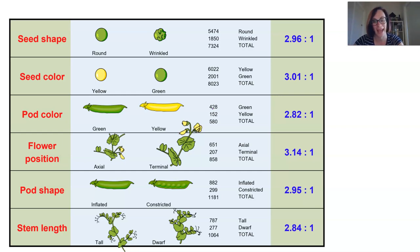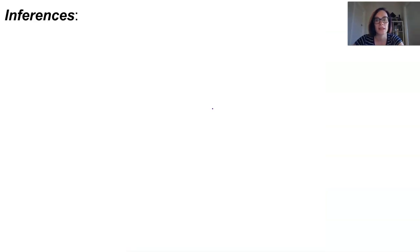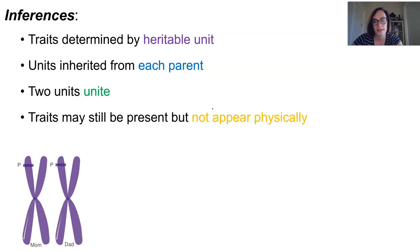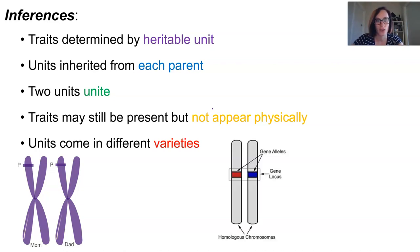So really importantly though, he saw patterns. He saw that some traits increased in abundance throughout the generations, others disappeared, but then appeared again later on in further generations. So from this, he made some inferences. He inferred that traits must be determined by some heritable unit passed on unchanged from parent to offspring. So we now know these as genes. He said that individuals inherit one of these units from each parent, and that they have these two units actually unite. Traits may not be physically appearing, but they can still actually be present. And the units come in different varieties, which we now know as alleles.